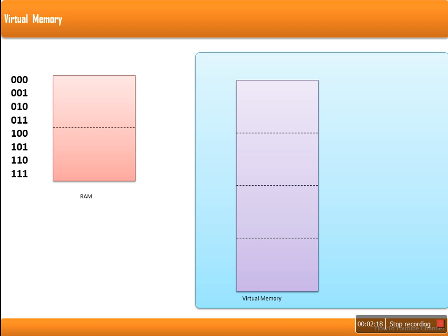We are considering a system with less memory. If you can see, we are having a memory with less capacity, but the virtual memory is double of RAM. So this virtual memory gives an illusion to the user that the memory available in this system is of a larger size.